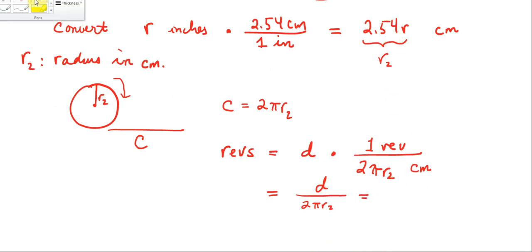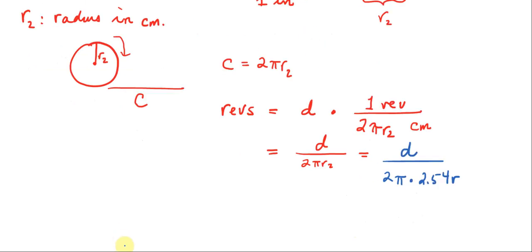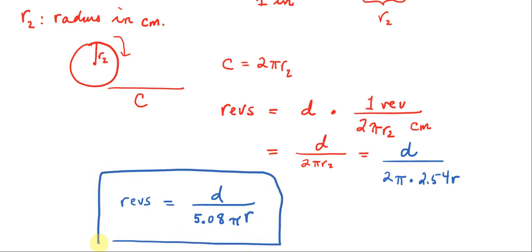But R2 is really just equal to 2.54R. So we'll make that substitution here. This would be the distance over 2π times 2.54R, because R2 is 2.54 times R. The big final step is that the number of revs that we need to turn would be equal to the distance over 5.08π times the radius in inches. So here you have it, a big final formula for how to do this sort of conversion.